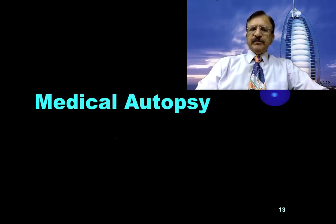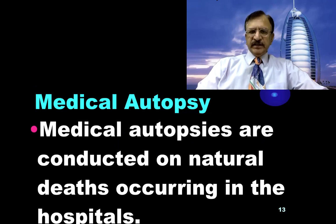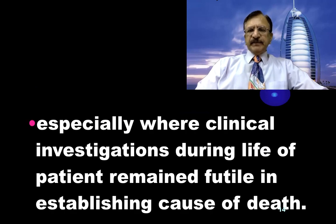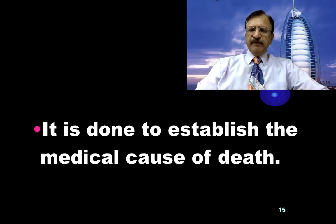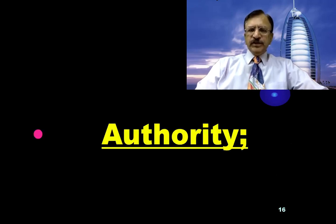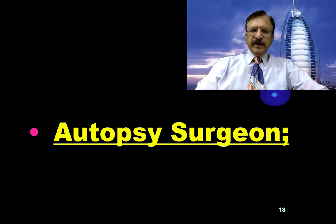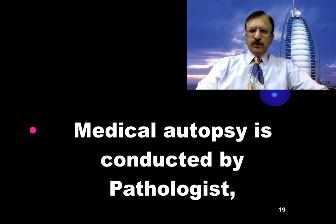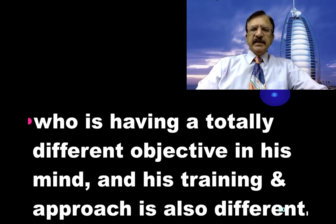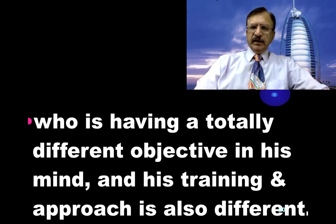Medical autopsies are conducted on natural deaths, usually occurring in hospitals, especially where the clinical investigation during life of the patient remained futile in establishing the cause of death. It is done to establish the medical cause of death, which is the primary objective. The authority in medical autopsies is granted by the next of kin relatives or the legal heirs. The autopsy surgeon — that is, who is going to conduct autopsies — are the pathologists, who have a totally different objective in mind, and their training and approach is different. They are only going to determine the disease, the process of the disease, and other pathological elements.